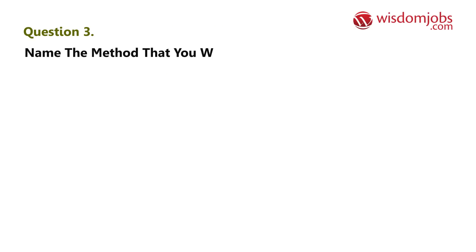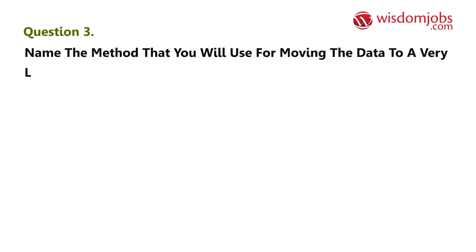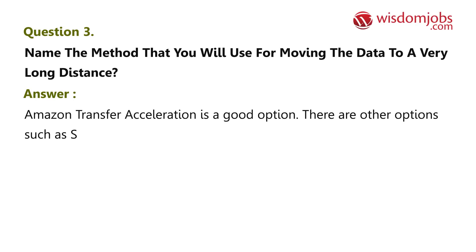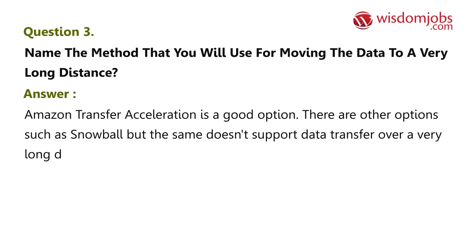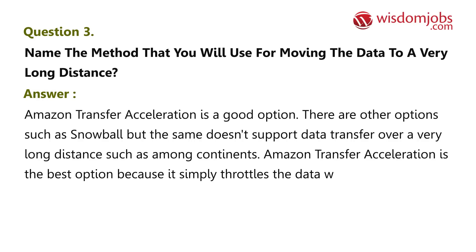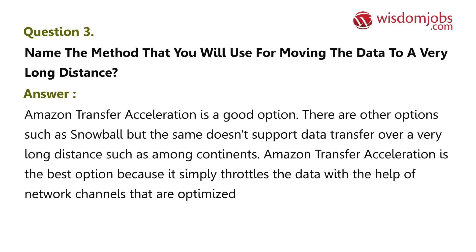Question 3: Name the method you will use for moving data over a very long distance. Answer: Amazon Transfer Acceleration is a good option. Other options such as Snowball don't support data transfer over very long distances, such as among continents. Amazon Transfer Acceleration is the best option because it throttles the data with the help of optimized network channels and assures very fast data transfer speed.